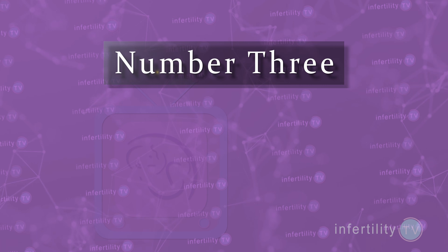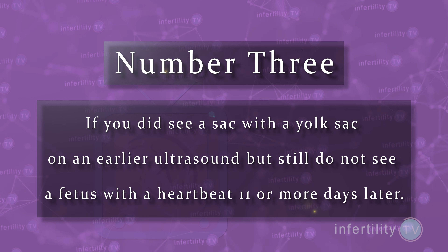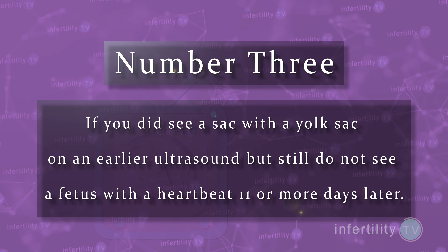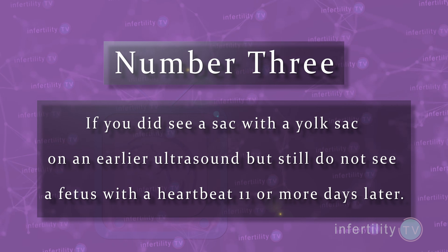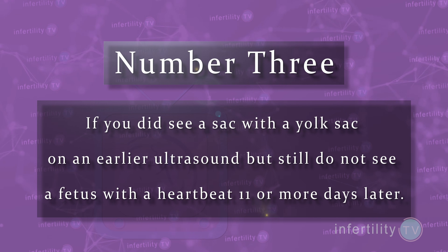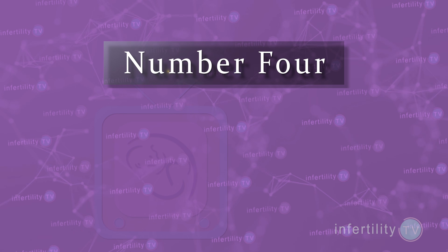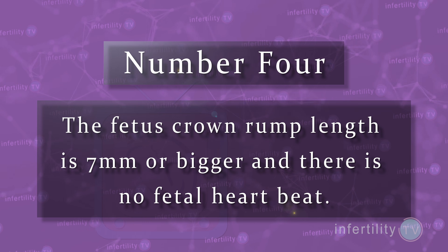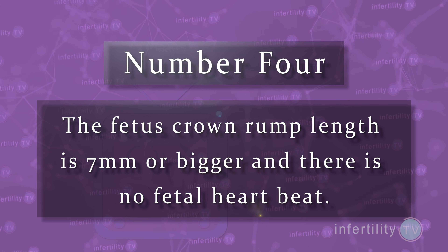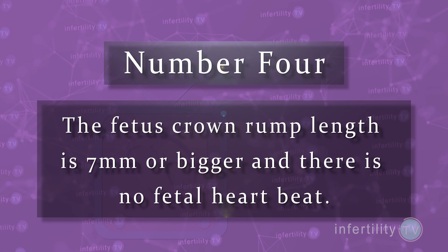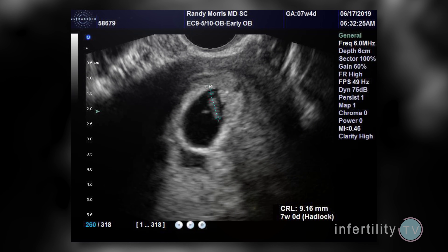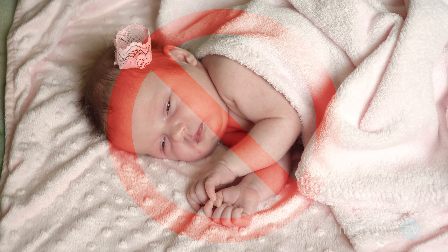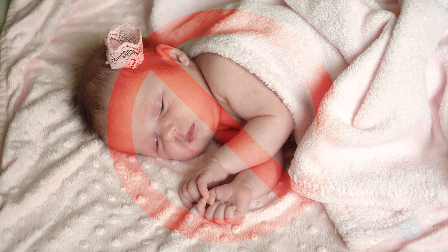Number three: if you did see a sac with a yolk sac on an earlier ultrasound but still do not see a fetus with a heartbeat 11 or more days later. And finally, number four: you have measured the fetus crown rump length and it is seven millimeters or bigger, and there is no fetal heartbeat. In all four of these examples, there is no chance that you will go on to have a live-born baby.